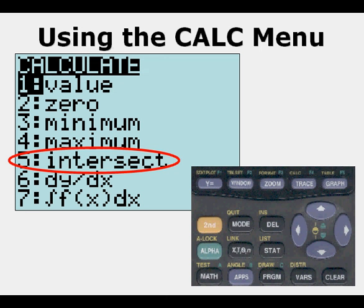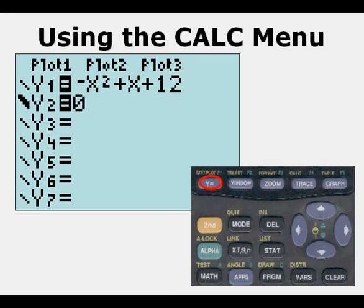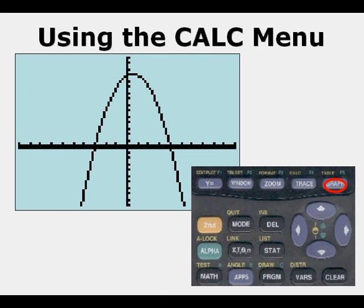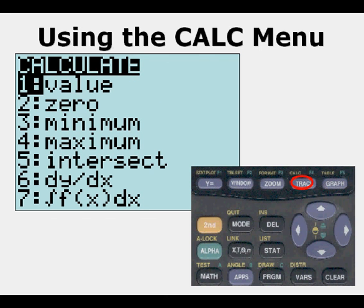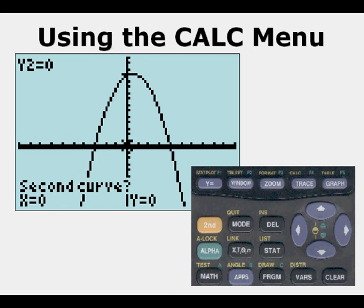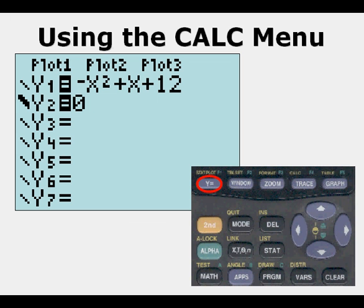Now we go to second trace and down to option 5, Intersect. This is typically used for finding solutions to systems of equations, but here we'll use it with our quadratic function as well. We go to Y equals and enter a second equation: y equals 0. We go to second trace 5, press enter three times, and we get the intersection of x equals negative 3, y equals 0 — one of our solutions. We can also find the other solution if desired.